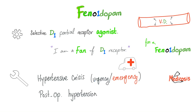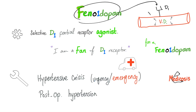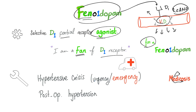Here is the lovely mnemonic: phenoldopam. You write it like this — 'phen' is like a phenol group, '1D' stands for D1 receptor, and 'opam' refers to dopamine. The mechanism of action of phenoldopam is selective D1 partial receptor agonist — it works only on D1. When phenoldopam binds to the D1 receptor on the blood vessel wall, it increases cyclic AMP in the smooth muscle, leading to vasodilation, lowering systemic vascular resistance, and therefore lowering blood pressure. Please let me know in the comments what a partial agonist means.